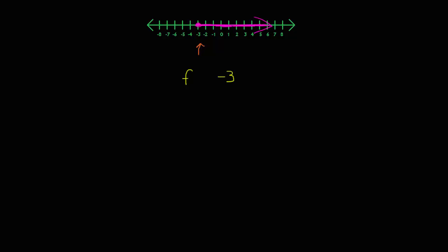Now we have to put our inequality symbol between our variable and our endpoint. The rule is that as long as the variable comes first, the direction the graph points and the direction that my inequality points are going to be the same. In this case both need to point to the right. This is a solid dot at my endpoint — a filled-in circle at the number negative 3. That makes it an or-equal-to inequality. So in this case f is greater than or equal to negative 3.